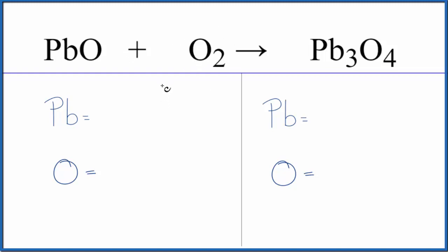To balance the equation, let's count the atoms up on each side. On the reactant side we have one lead atom and one oxygen, plus the two here in the O₂, so we have three oxygen atoms. Product side: